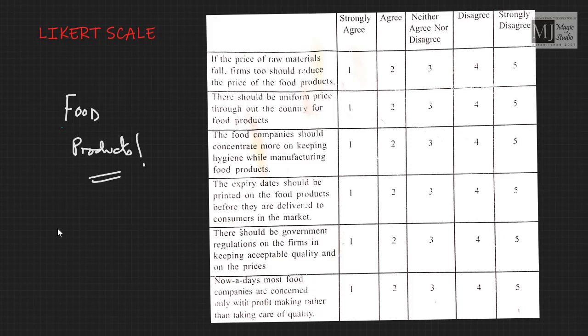Other statements include: 'There should be uniform price throughout the country for food products,' and 'The food company should concentrate more on keeping hygiene while manufacturing food products.' These statements can be devised through general sampling and informal interviews — you keep asking people and then convert their responses into statements.